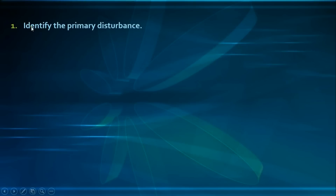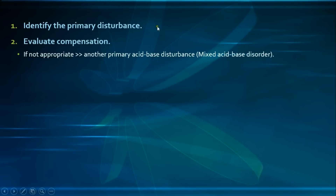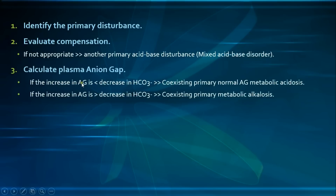To summarize the approach: step one is to identify the primary disturbance using pH, pCO2, and bicarbonate levels. Step two is to evaluate compensation — if compensation is inappropriate, whether inadequate or overcompensated, that indicates a mixed acid-base disorder. Step three is to calculate the plasma anion gap, especially with metabolic acidosis, to differentiate high anion gap from normal anion gap metabolic acidosis.